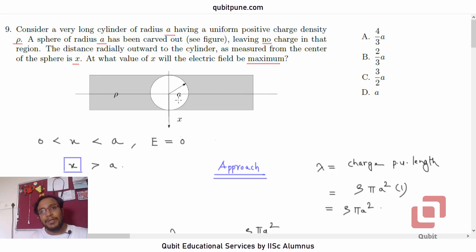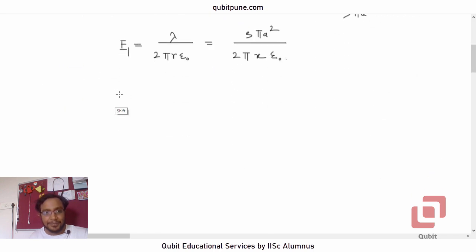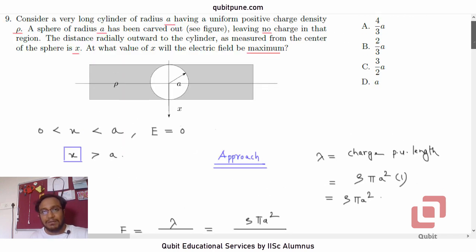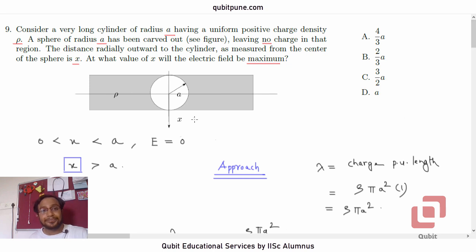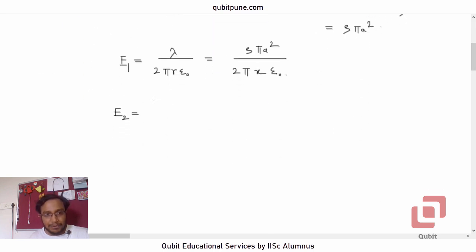This sphere is going to behave as a point charge for electric field calculation for values which are greater than the radius. The total charge of the sphere will be obtained by multiplying the volume charge density rho by the volume of the sphere, which will be 4 pi by 3 A cubed. If you multiply this by rho, we will get the total charge carried by the sphere.